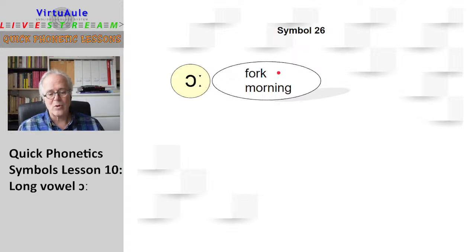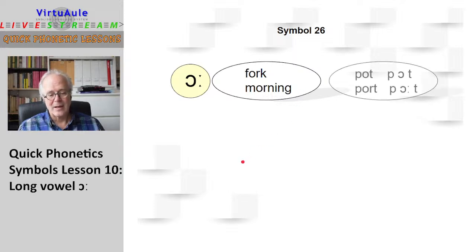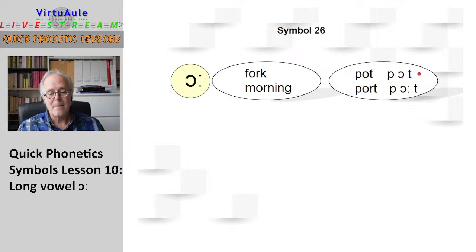It's the sound in the word "fog" and "morning." The symbol is a backwards C, or an O with a little opening. If it's a short sound, it sounds like "pot," but it's basically the same sound just made in a longer way. So it's just a long sound. Let's look at the difference: "stop" versus "stalk."